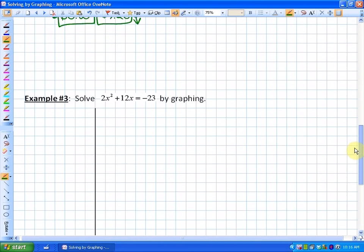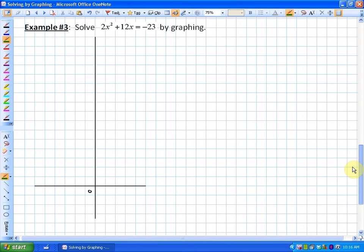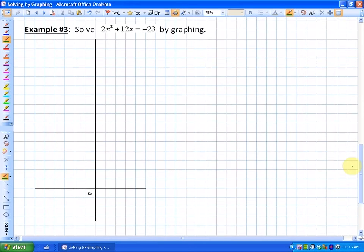Moving on to our last problem, it says solve 2x squared plus 12x is equal to negative 23 by graphing. Although there's other ways of doing this, I would again suggest putting this into standard form. So adding 23 and making one side equal zero. So essentially we're solving 2x squared plus 12x plus 23 is equal to zero. So again, we're trying to find out what values of x make the output or make this function equal to zero. So where are the x-intercepts?